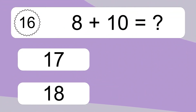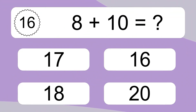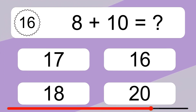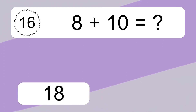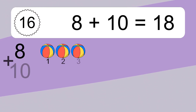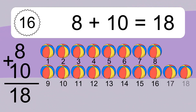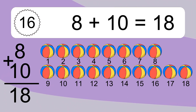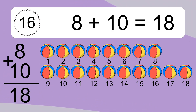8 plus 10 equals what? 8 plus 10 equals 18. Let's count it. 1, 2, 3, 4, 5, 6, 7, 8, 9, 10, 11, 12, 13, 14, 15, 16, 17, 18.